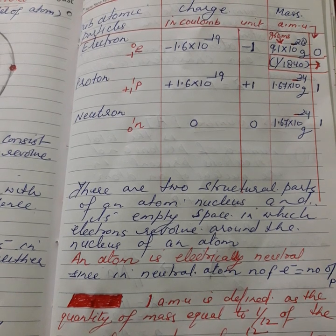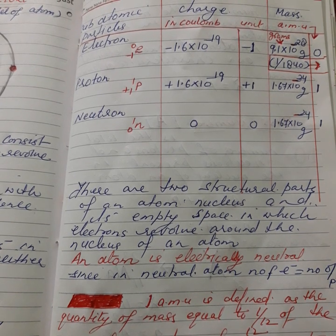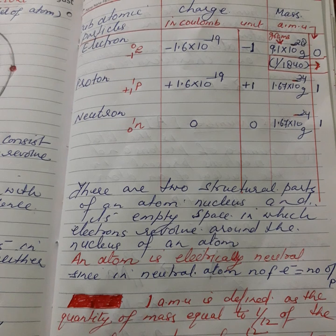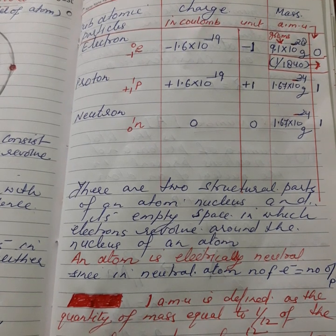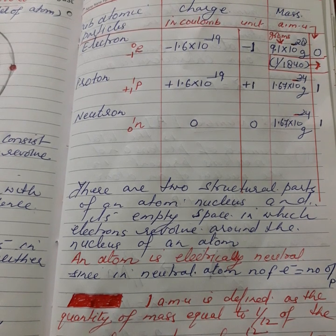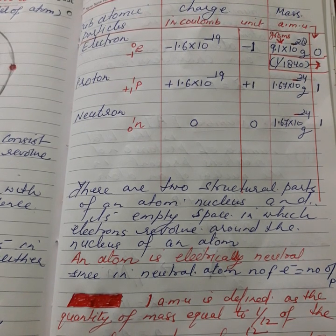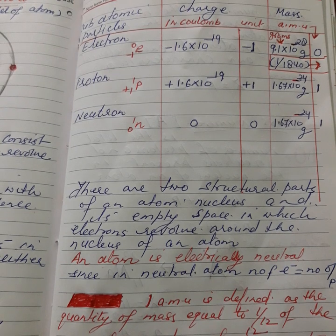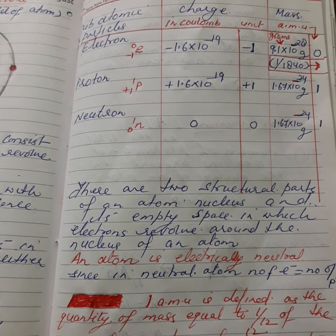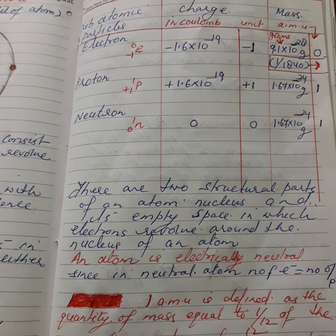The mass of a proton is 1 atomic mass unit, and its absolute mass is 1.67 × 10⁻²⁴ gram. The mass of a neutron is nearly equal to that of a proton; it is also taken as 1 amu, and its absolute mass is 1.67 × 10⁻²⁴ gram.